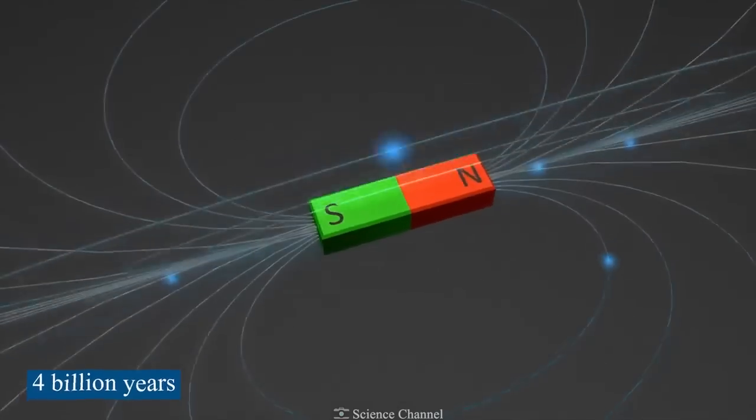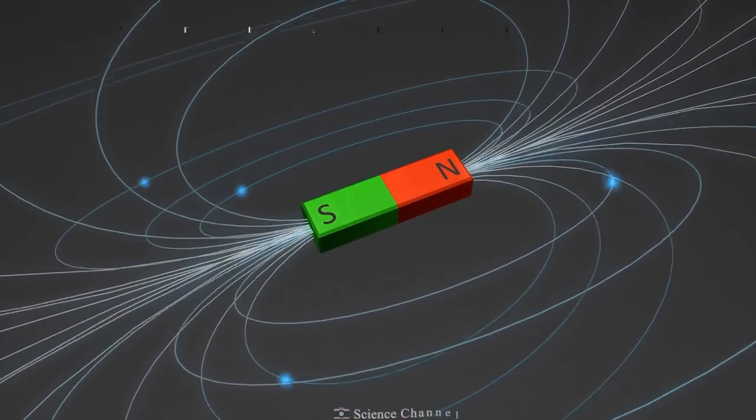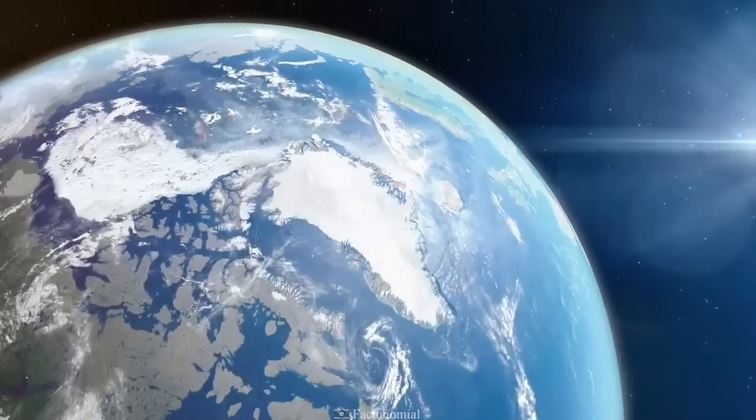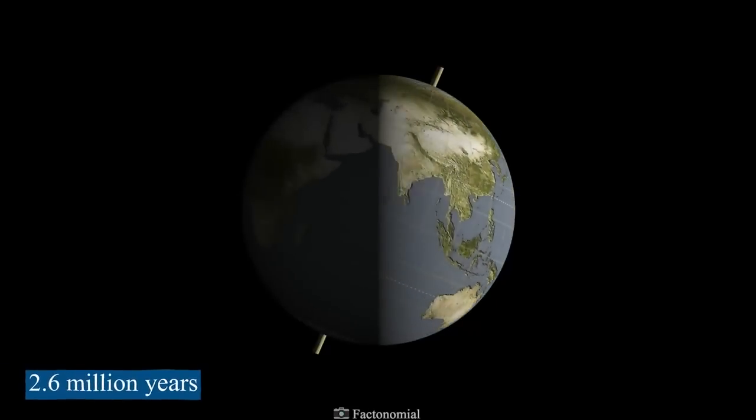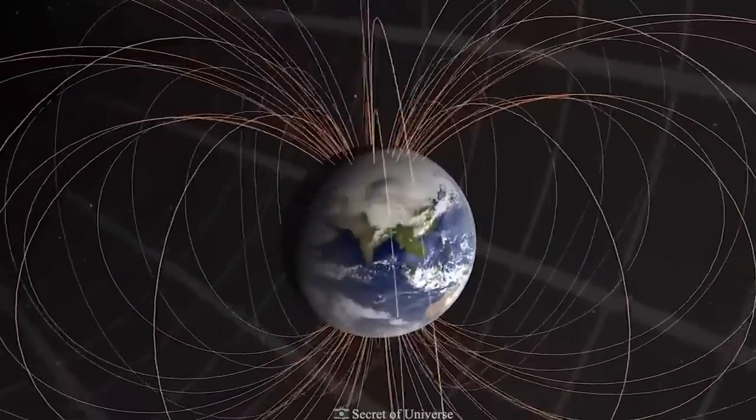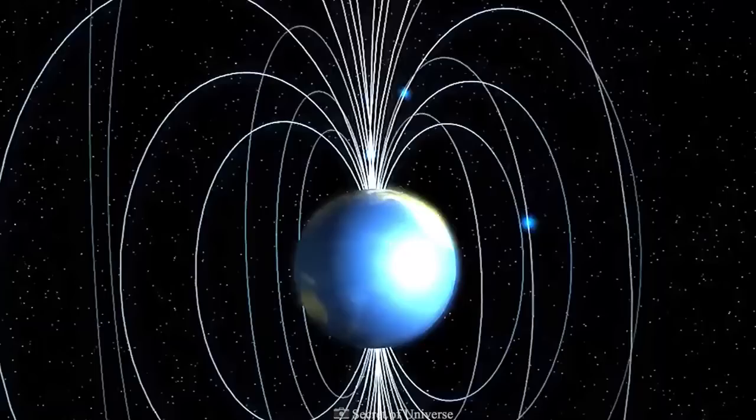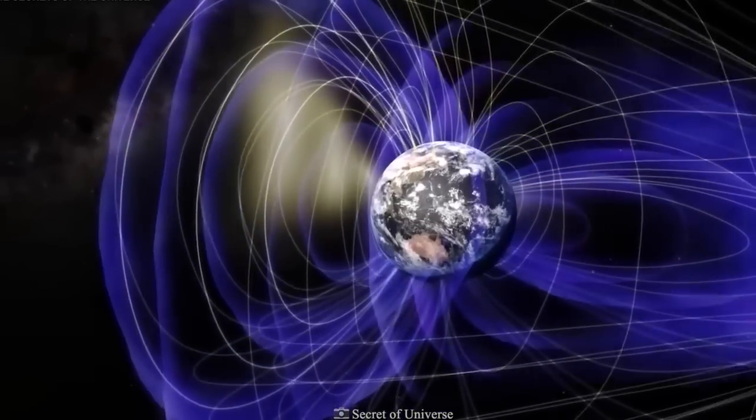At least 4 billion years ago, our magnetic field began to form. Since then, the Earth's magnetic poles have switched places many times. In the last 2.6 million years, the magnetic field has changed 10 times. The last time was 780,000 years ago, so some experts think we're due for another.